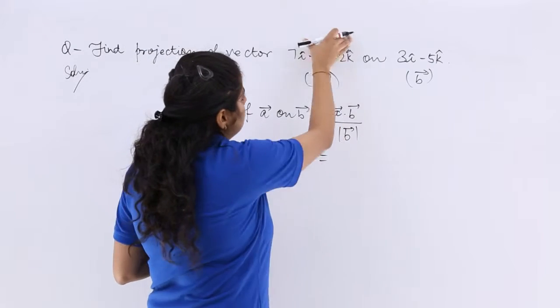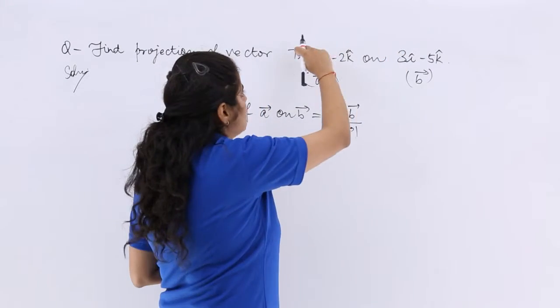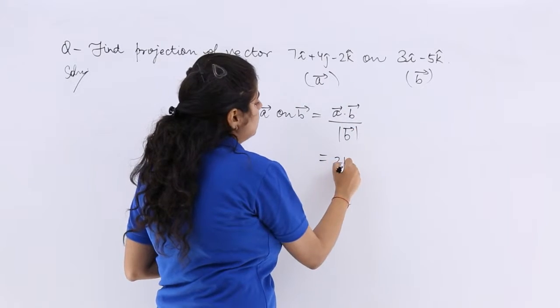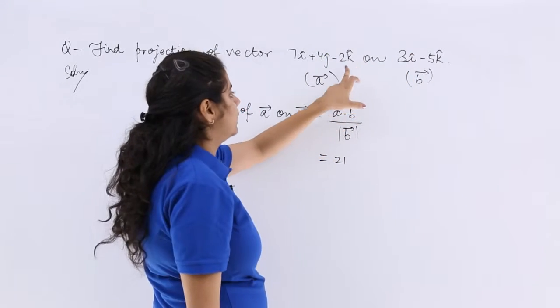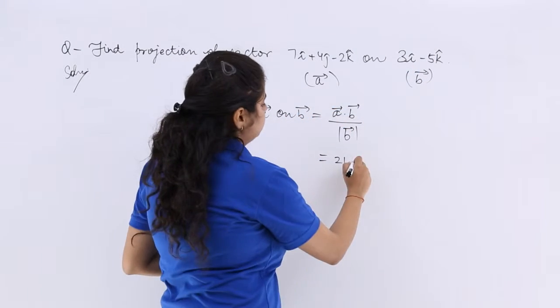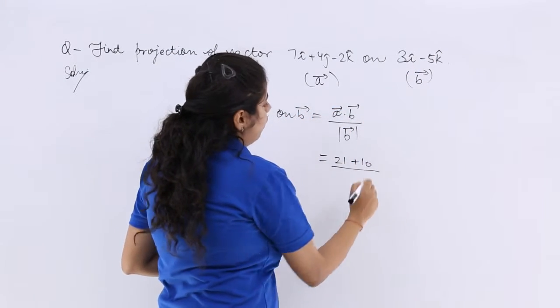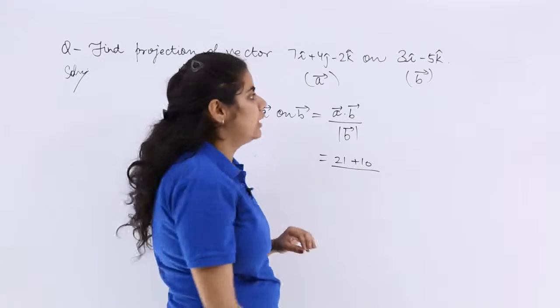So a vector dot b vector. So what should be the answer? 7 into 3 is 21. 4 into nothing with j. So you do not have to write anything. 2 and 5 make it 10 upon the whole magnitude of only b vector.